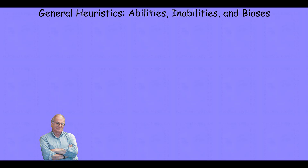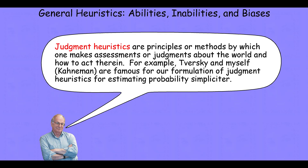When we think about general heuristics and how they operate in System 1, we can look at the work of Daniel Kahneman and Amos Tversky. The way they thought about judgment heuristics was that they were principles or methods — ways in which our brain operates on information. The goal of these judgment heuristics is to make assessments or judgments about the world or how to act therein. Kahneman and Tversky are famous for formulating heuristics that describe System 1 inference patterns for estimating the likelihood of events and relationships.